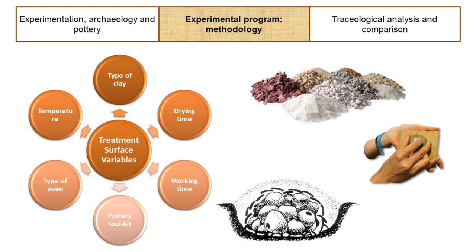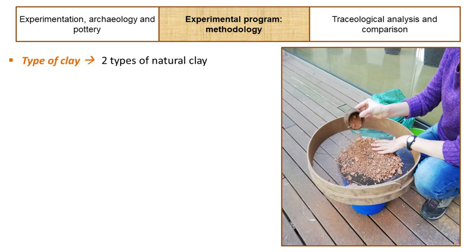We have used two types of clay. A natural clay, prepared and packaged by professionals. This clay has a very fine temper and the traces in the samples are well defined. Another natural clay is in raw state. We have cleaned it, filtered it and hydrated it. This last clay is rich in temper. The traces are not as well defined as in the previous case, but the result in the samples is more like the archaeological remains. We will be able to compare the difference between the results of both clays.